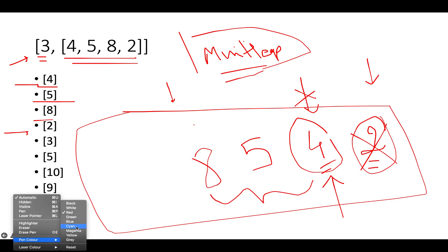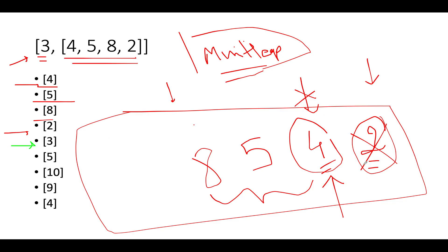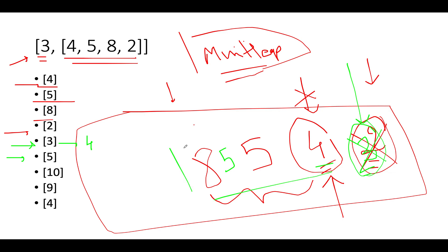Next we add 3. Since 3 is lower than 4, the topmost element updates to 3. The heap size exceeds k again, so eviction occurs — 3 is removed as the lowest of the four elements. We return the topmost element, which is 4, meaning 4 is the third largest. Next we add 5. The heap size exceeds k, so 4 gets evicted. The next topmost element becomes 5, so we return 5.